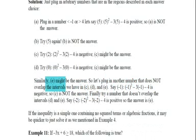Let's plug in another number that does not overlap the intervals we have in C, D, E. Say minus 1. Minus 1 squared minus 3 into minus 1 minus 4 is negative. So C is not the answer. Finally, try a number that does not overlap the intervals D, E. Say minus 2. Minus 2 squared minus 3 into minus 2 minus 4 is positive. So the answer is E. If the inequality is simple, one containing no squared terms or algebraic functions, it may be quicker to solve it as we mentioned in example 4. Please refer to the previous video to understand that.